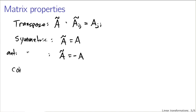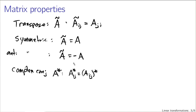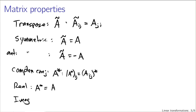We can also take the complex conjugate of a matrix, written as A-star. The ijth component of A-star is just the complex conjugate of the ijth entry of A — you take the complex conjugate of all the elements. We describe a matrix as real if the complex conjugate of the matrix equals the matrix, and imaginary if the complex conjugate equals minus the matrix.